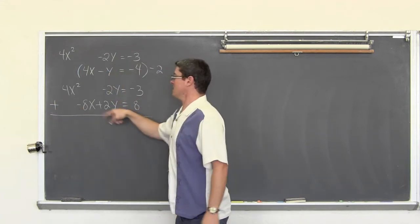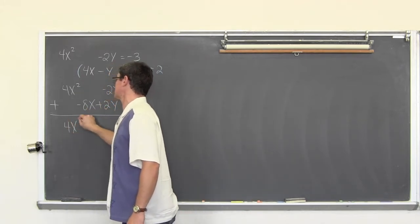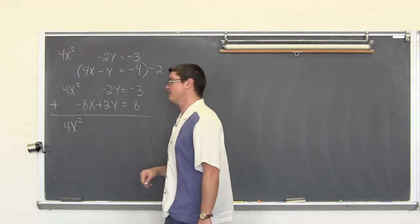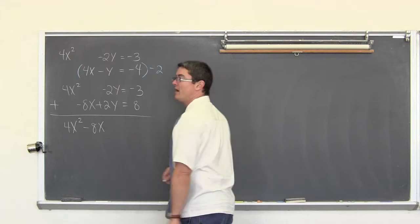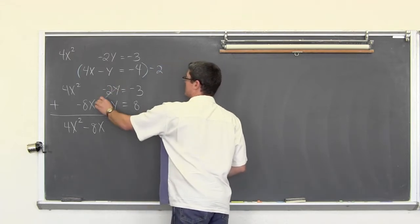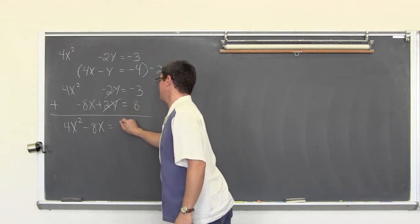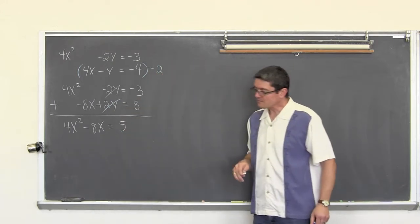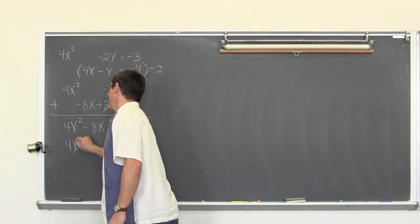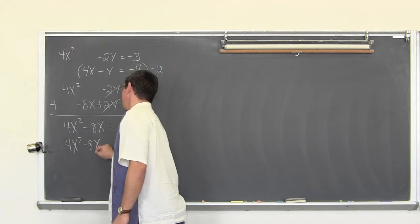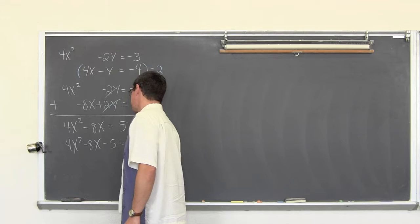With all my columns nicely organized: four x squared plus zero is four x squared; zero plus negative eight is negative eight x; the negative two y and the positive two y cancel out; negative three plus eight equals five. Setting equal to zero by bringing the five over with subtraction, we get four x squared minus eight x minus five equals zero.